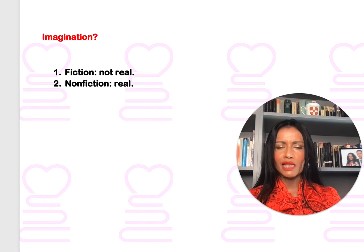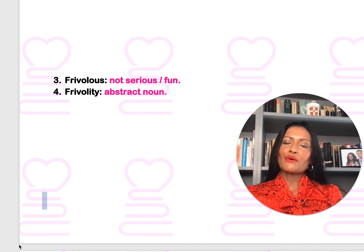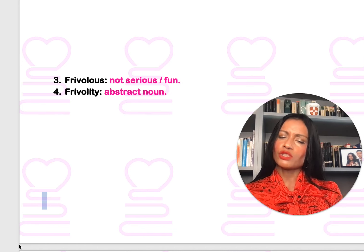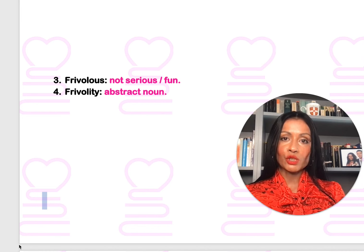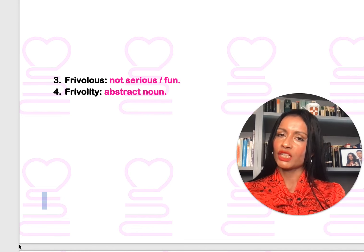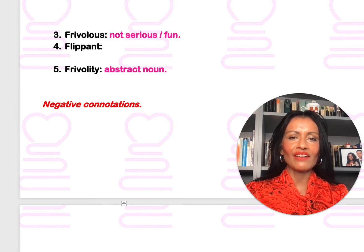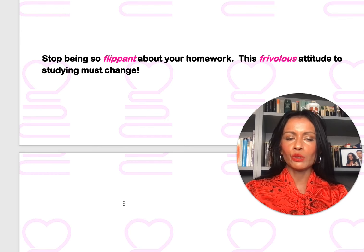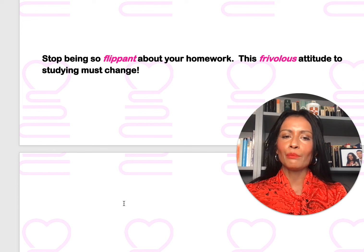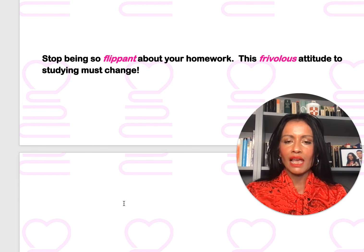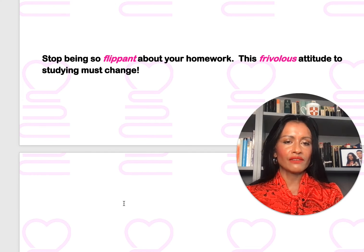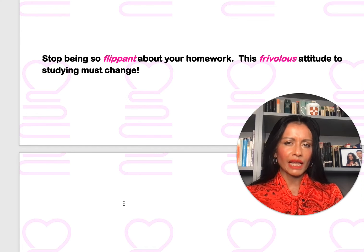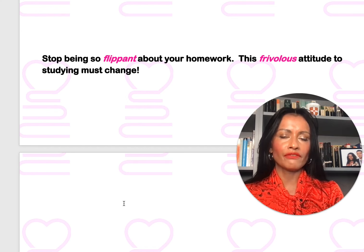Okay, now we've had the serious bit. Let's get on with the frivolity, shall we? So I did say at the start that I was feeling frivolous — that means fun, not serious. Frivolity being the abstract noun and frivolous being the adjective. By way of context, let's have a look at these sentences: 'Stop being so flippant about your homework.' 'This frivolous attitude to studying must change.' So there we have flippant and frivolous in sentences, exemplifying that they definitely do have negative connotations. Being lighthearted in these contexts can be very, very negative indeed. Don't be flippant. Don't have a frivolous attitude to your studying.